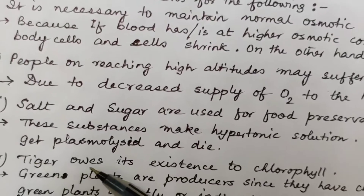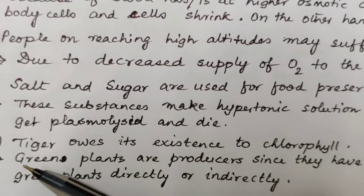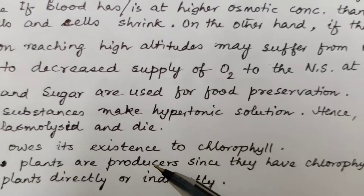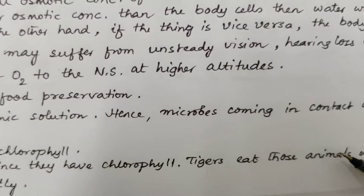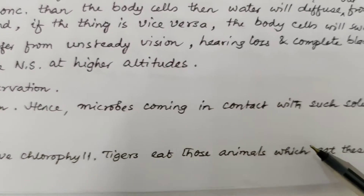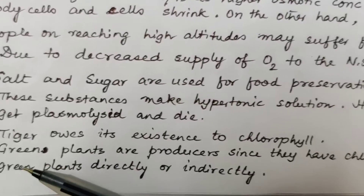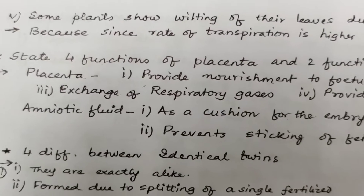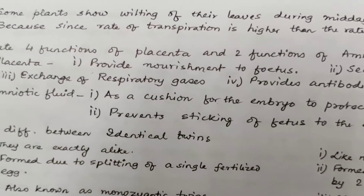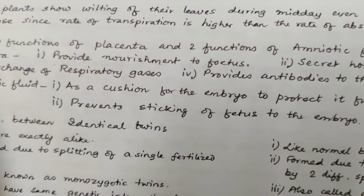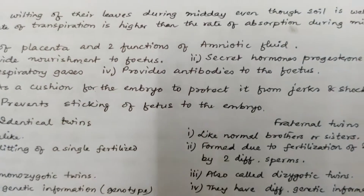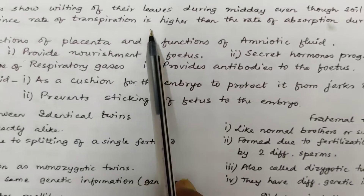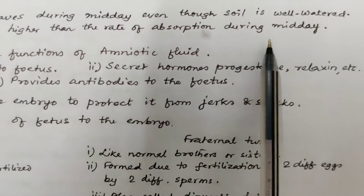Next question: tiger owes its existence to chlorophyll. Green plants are producers since they have chlorophyll, and tigers eat those animals which eat these green plants either directly or indirectly. Number five: some plants show wilting of their leaves during midday even though the soil is well watered, because the rate of transpiration is higher than the rate of absorption during midday.